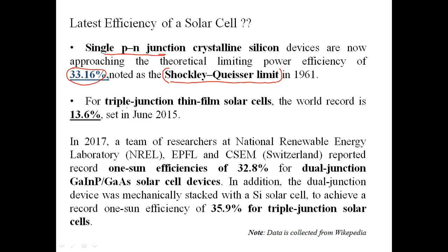For a triple-junction thin-film solar cell, an efficiency of 13.6 percent has set a world record. One set of researchers from three laboratories in Switzerland recorded an efficiency of around 32.8 percent for a dual-junction gallium indium phosphide and gallium arsenide based solar cell. There is one more example where they claim to have achieved 35.9 percent efficiency.